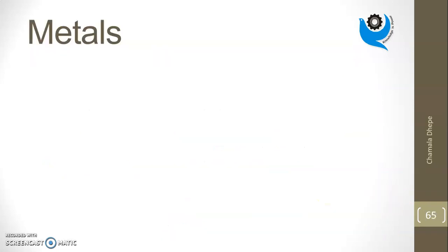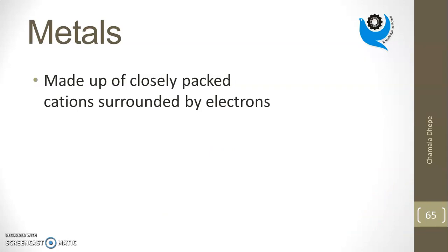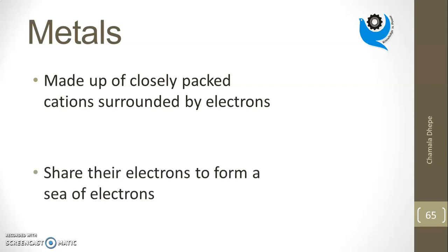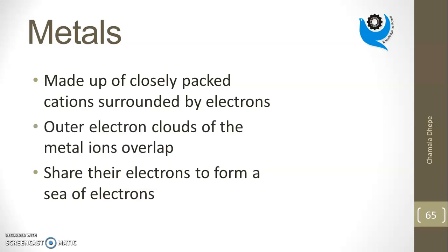Metals are made up of closely packed cations surrounded by electrons. The outer electron clouds of the metal ions overlap and share electrons to form a sea of electrons.